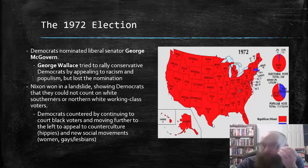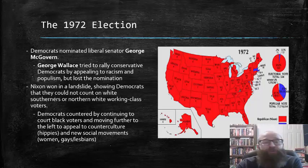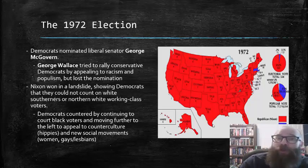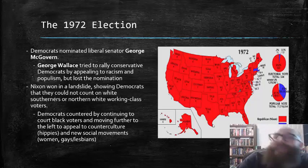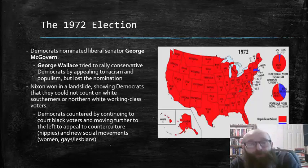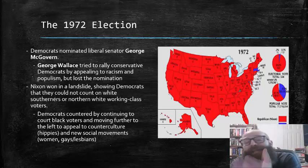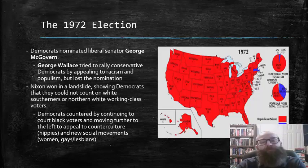Democrats took that lesson and countered by continuing to court Black voters and moving further to the left to appeal to counterculture people, like the hippies of the 1960s, and new social movements like the women's rights and the gay and lesbian rights movements.